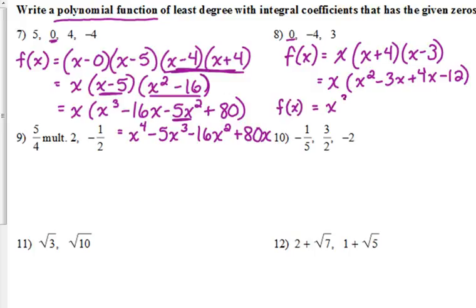Distribute my x. x times x squared is x cubed. I've got negative three x plus four x. That's one x. So when I multiply that by the x in front, that's x squared. And then x times negative twelve is negative twelve x. That is it. When we plug in zero, negative four, and three into that polynomial, we should get zero every time.